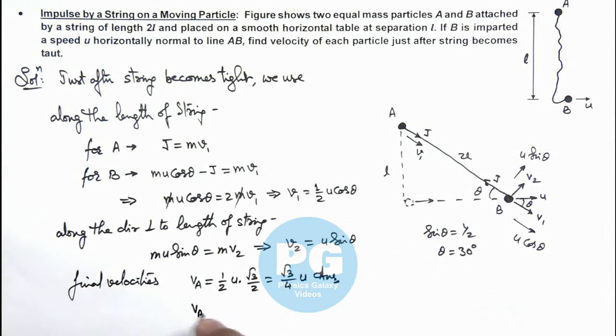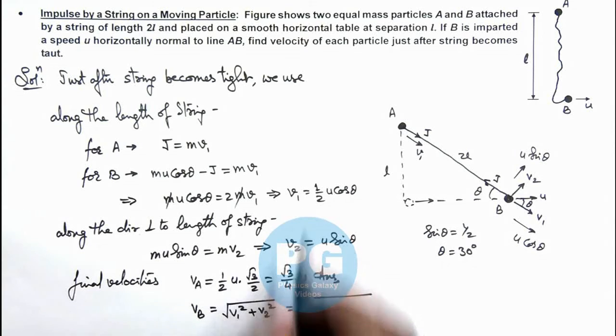And for particle B, we can write its final velocity is root of v1 square plus v2 square. So on substituting the values this will be root of.